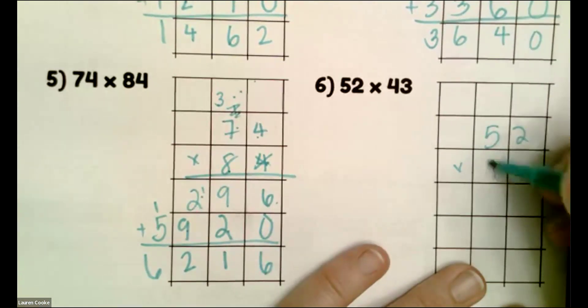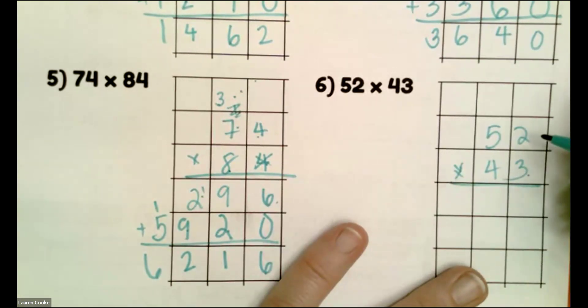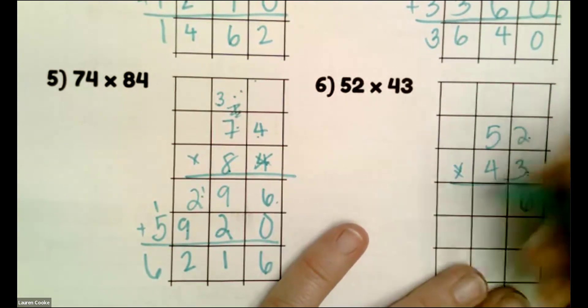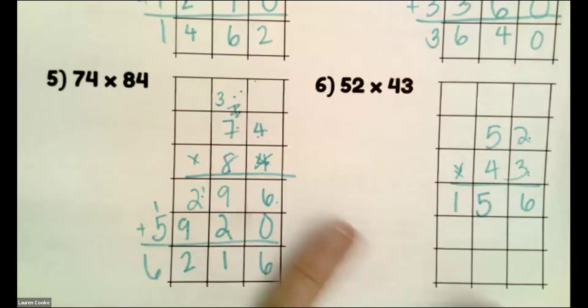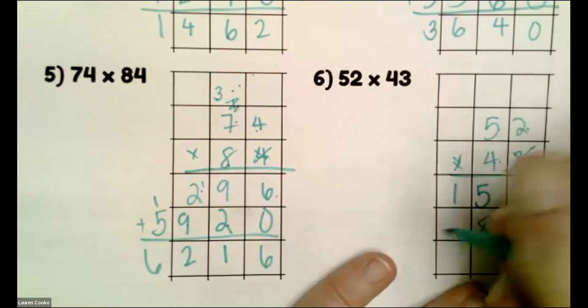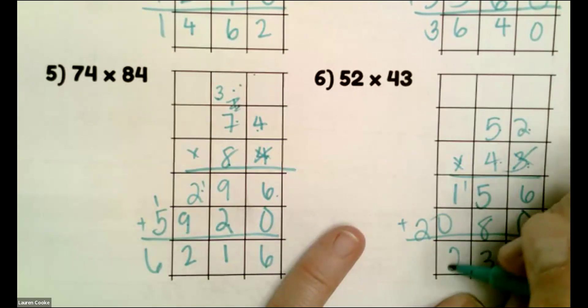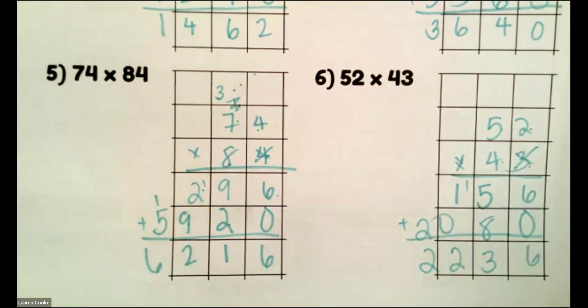Then I have 52 times 43. Three times two, six. Three times five, 15, or three times 50. Dust. Four times two, eight, 20. Six, 13, two, two.